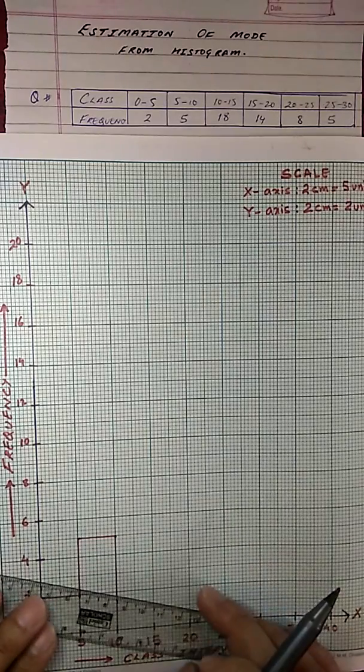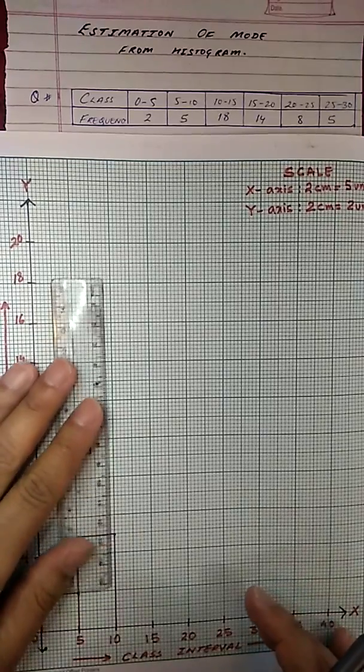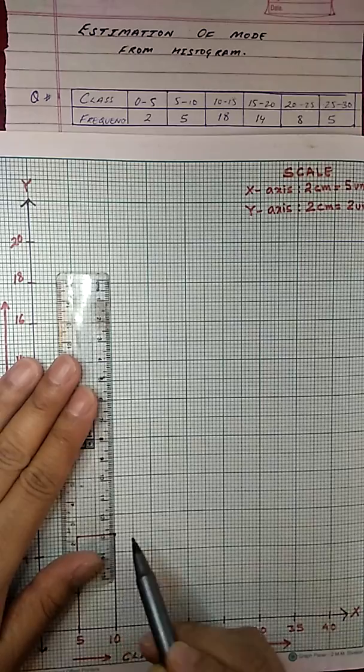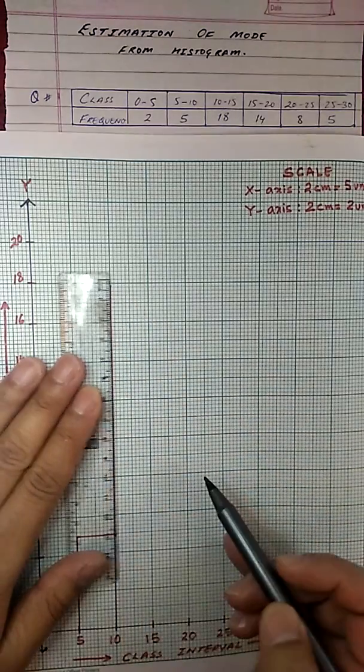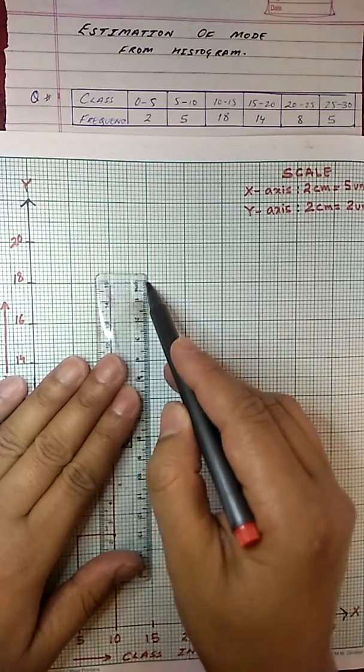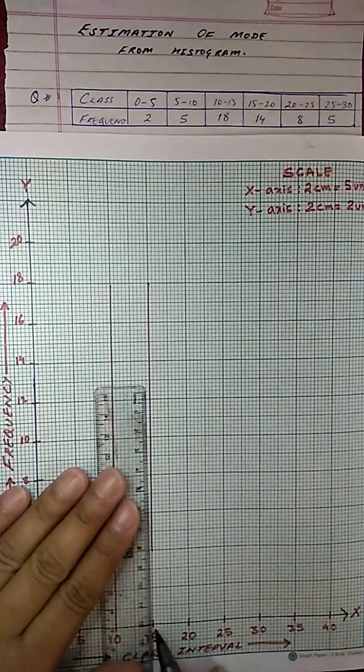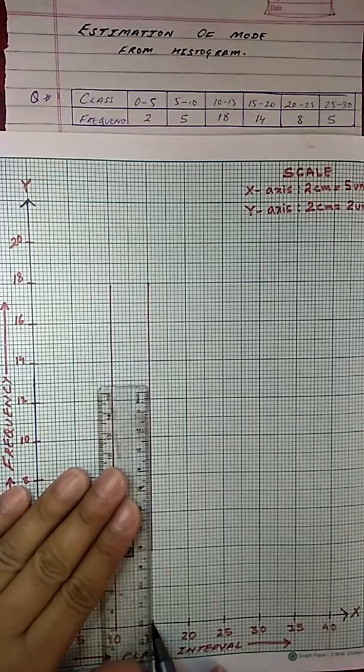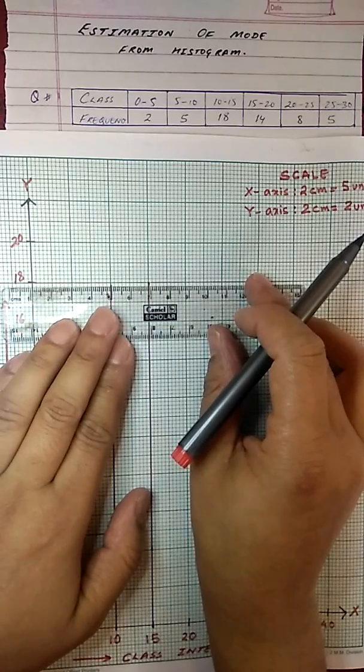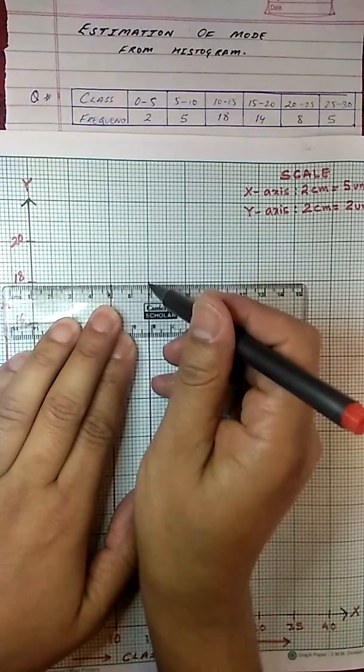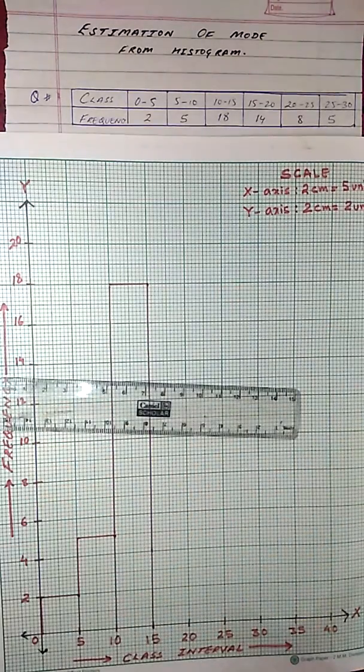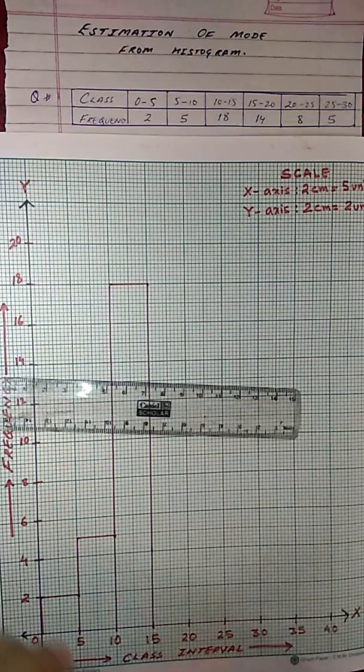So this is frequency 5. Now the next one is 18. So 18 clearly is here. This is 18. Now from the table itself, we can see that 18 is the highest frequency. That means the corresponding class 10 to 15 is the modal class. That means the mode lies somewhere between 10 to 15.